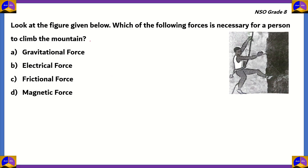Let's look at this question. We need to look at the figure and find out which of the following forces is necessary for a person to climb the mountain. We're looking at a rock climber climbing up a cliff face, using his arms and legs to grip the cliff face or the rope. The options are gravitational force, electrical force, frictional force, and magnetic force. Right off the bat, we can discount electrical and magnetic force, as we are dealing with a living object with very few magnetic or electrical properties. So options B and D are incorrect.